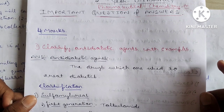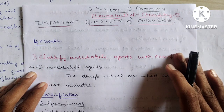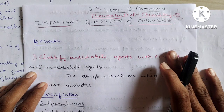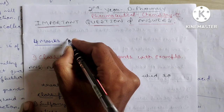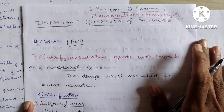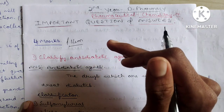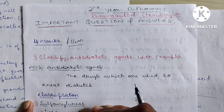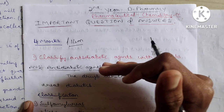This is Part 1. In the next class I will upload Part 2. This Part 1 contains 15 important questions and answers of Pharmaceutical Chemistry. These questions are worth four marks and fourteen marks. In Section B they will ask 14 or 13 mark questions.